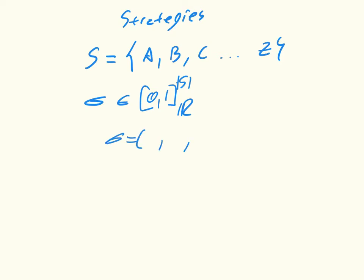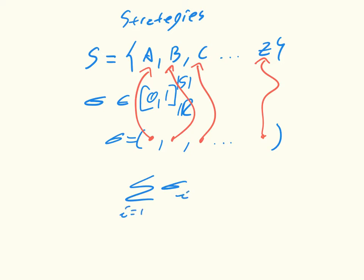and we simply have that as elements between 0 and 1 of size S. So sigma is essentially a vector that tells us the probability with which we play A, the probability with which we play B, the probability with which we play C, etc. So immediately we have a particular relationship, which is that the sum of sigma i for i equals 1 to the size of S must be equal to 1, because it is a probability distribution.